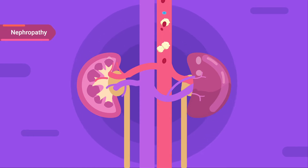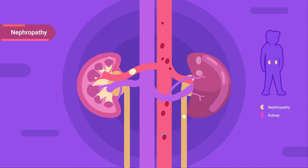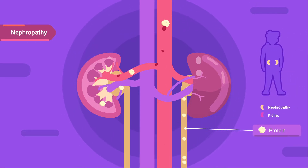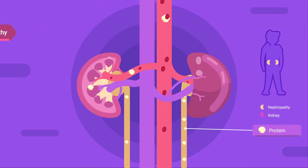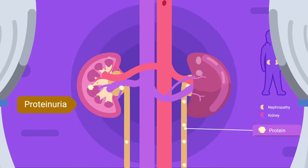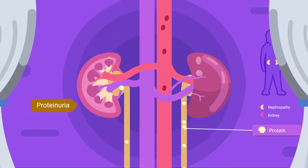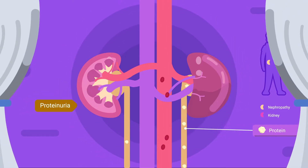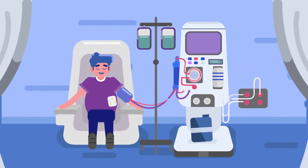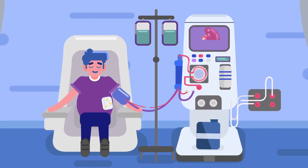In diabetic retinopathy, the kidneys begin to pass protein into the urine, a condition known as proteinuria. With the progression of this condition, kidney disease can occur, which can lead to kidney failure and possibly dialysis.